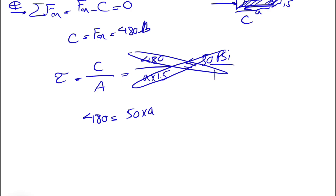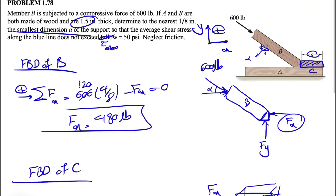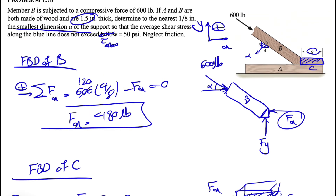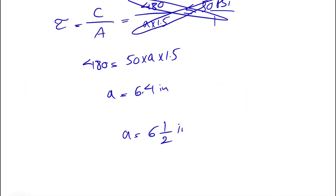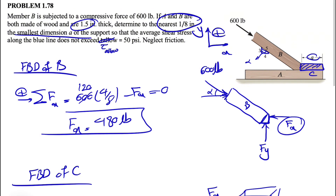Cross-multiplying, we get 480 equals 50 times A times 1.5. Solving for A: 480 divided by 50 divided by 1.5, which gives 6.4 inches. Since the question asks for the answer to the nearest 1/8 inch, the closest value we can report is 6.5 inches as the final answer.